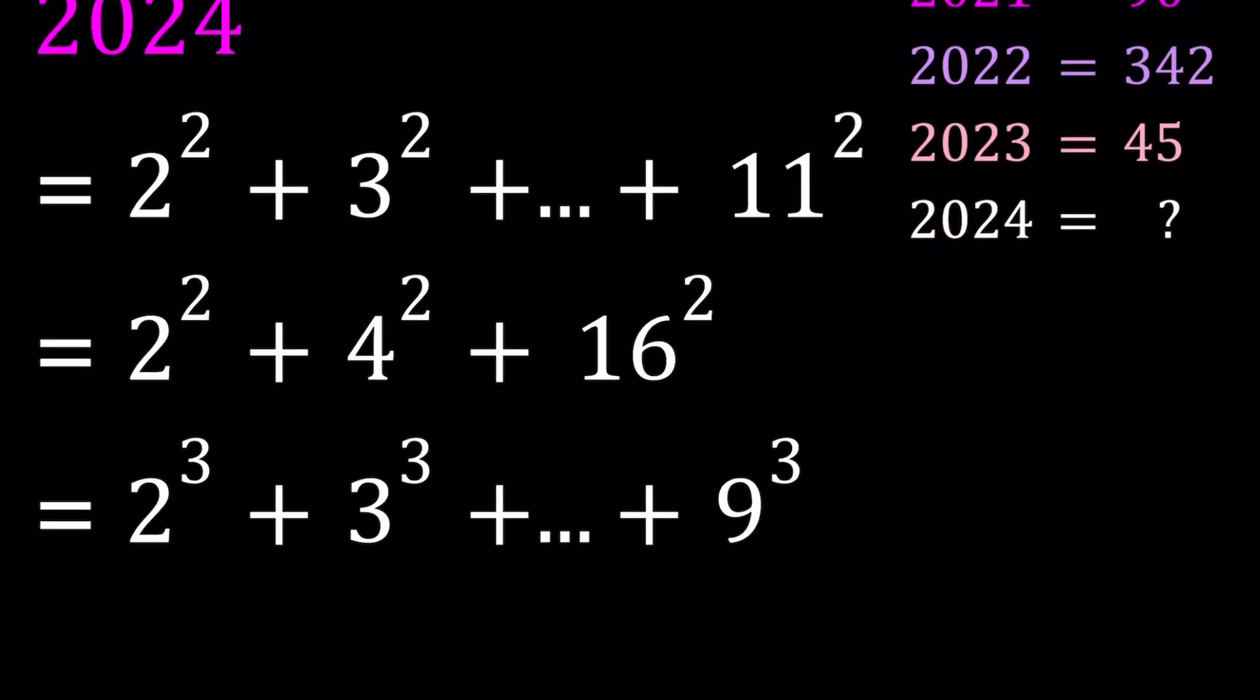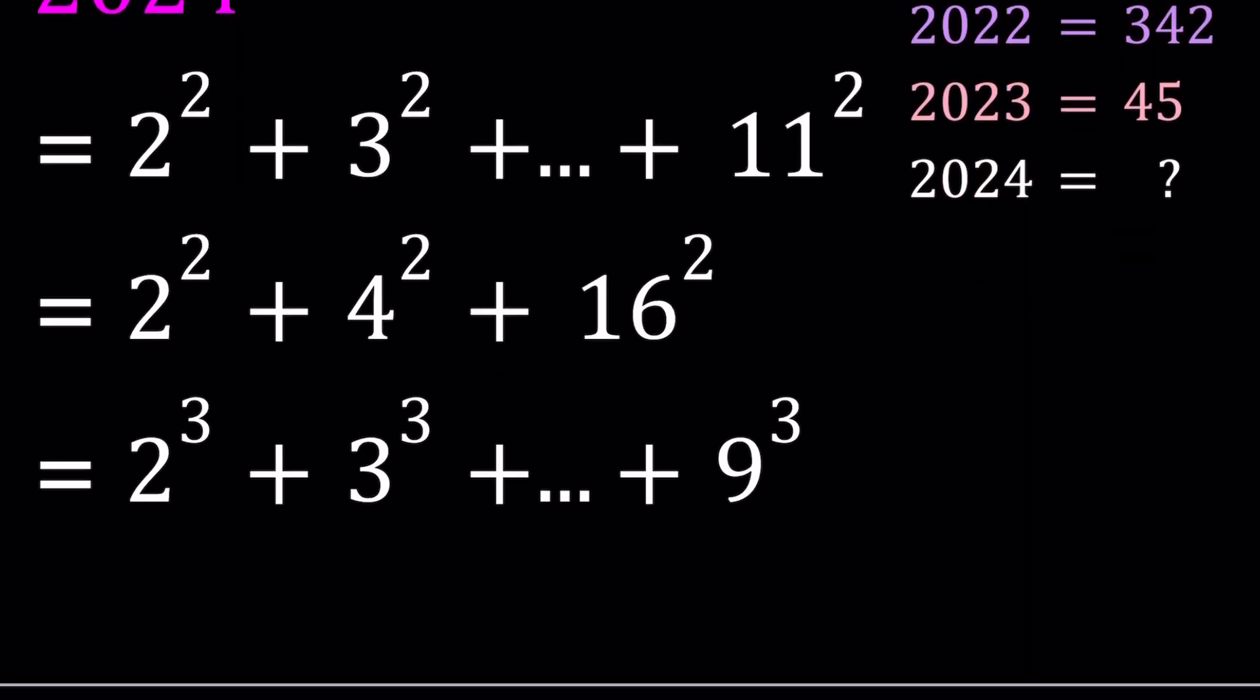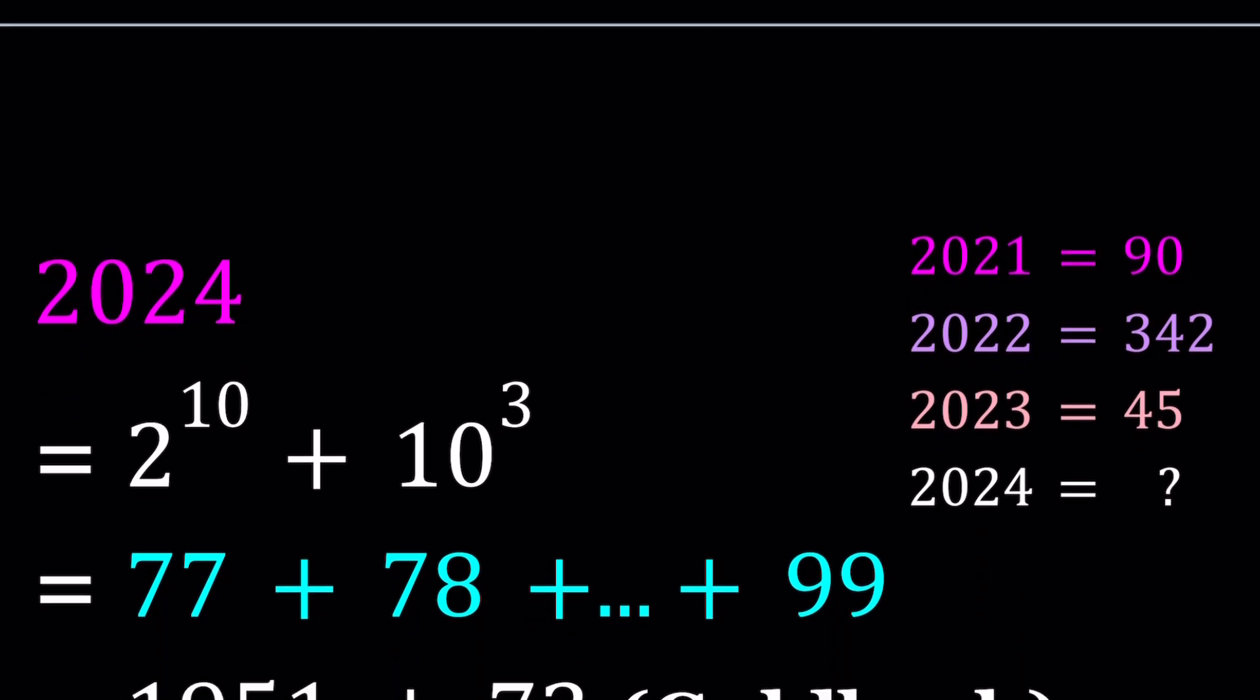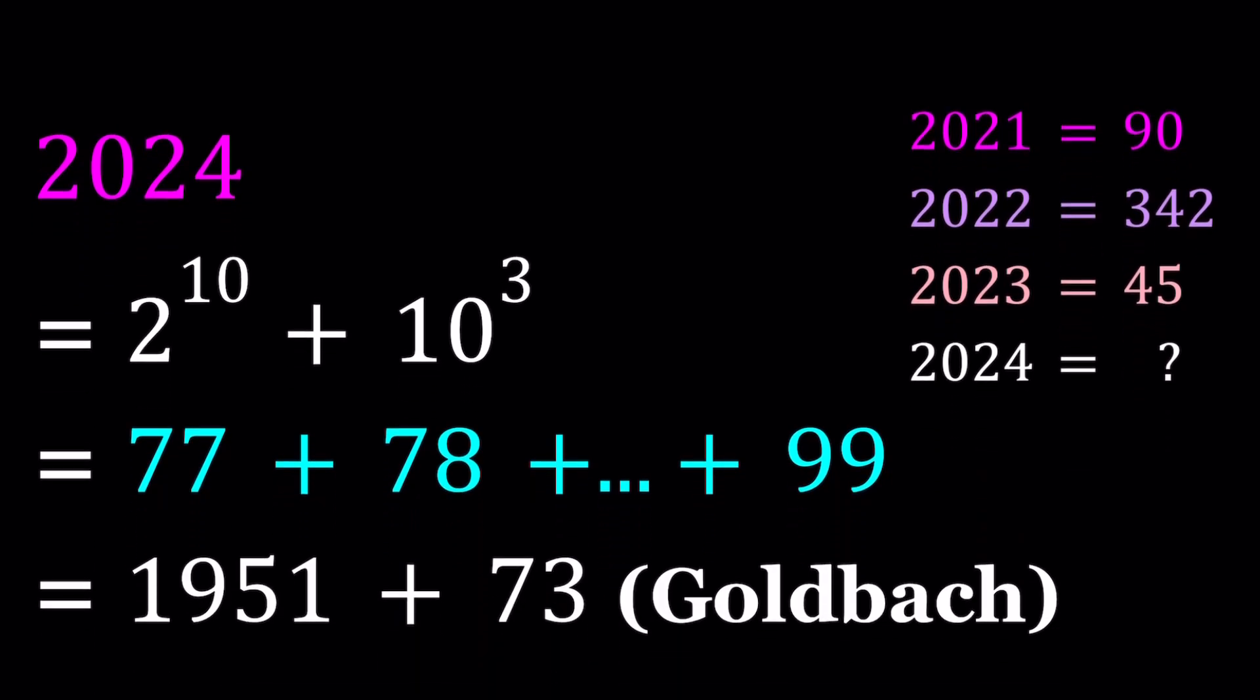It can also be written as a sum of consecutive cubes, which is, I think, pretty interesting. Now, another fact about 2024 is that it can be written as a sum of 2 powers with different bases, which kind of uses the 10 twice, 2 to the 10th and 10 to the 3rd. As you probably know, hopefully, 2 to the 10th power is 1024, which also contains 10 in it, or 1 and 0.